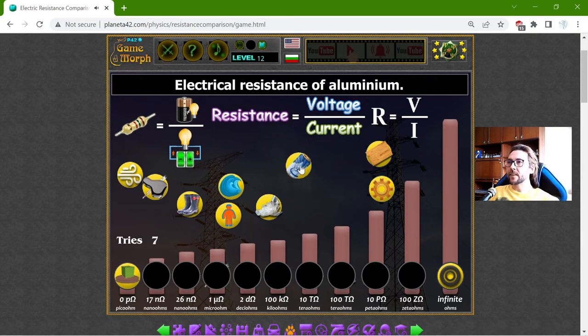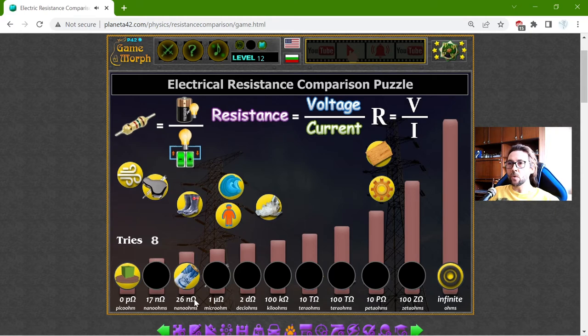The electrical resistance of aluminum. Now, I know the aluminum is the aluminum. I finally pronounced this correctly, I think. Aluminum. It has a good electrical resistance, so it should be somewhere to the left, maybe 26 nano ohms.